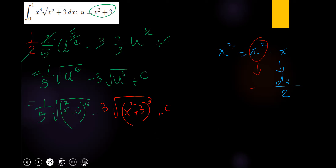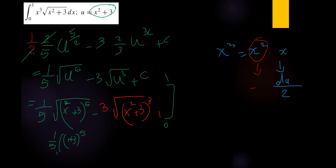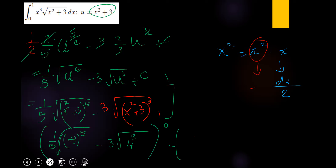Now evaluate with the interval from 0 to 1: plug in x equals 1 and x equals 0. At x equals 1, we get one-fifth times (1 + 3) to the power 5 over 2 minus square root of 4 cubed. At x equals 0, we get one-fifth times (0 + 3) to the power 5 over 2 minus square root of 3 cubed. Find the numerical answer with a calculator.